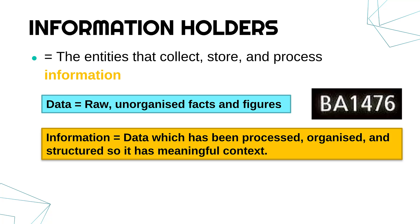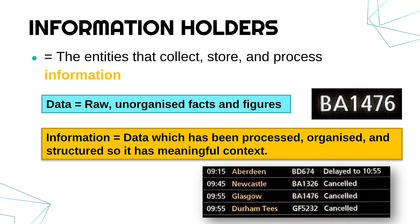Information is data which has been processed, organised and structured so that it has meaningful context. 'Meaningful' essentially means it's useful to us, and 'context' is some wider understanding of why this data is there and what it's for. For instance, the context of this bit of data might be that it's part of a departures board at an airport — we can see our data within wider context. That's information because it's got that context. The two words, data and information, are often misused — I'm sure I'll mix them up myself at various points, but that is the difference.